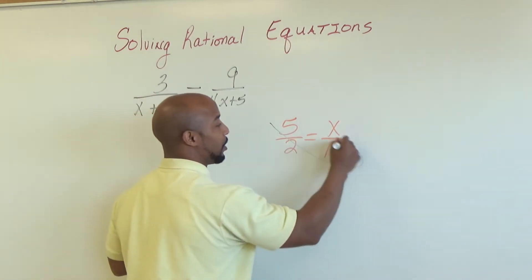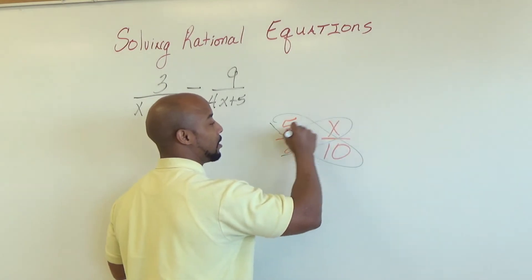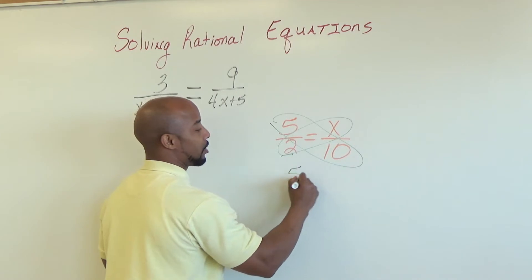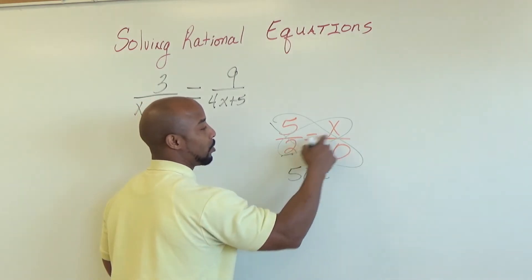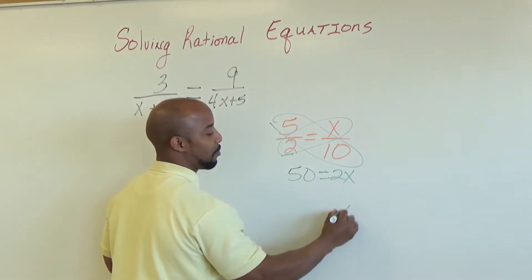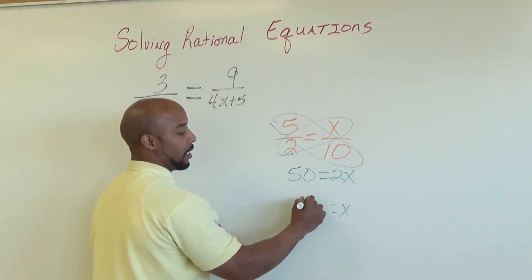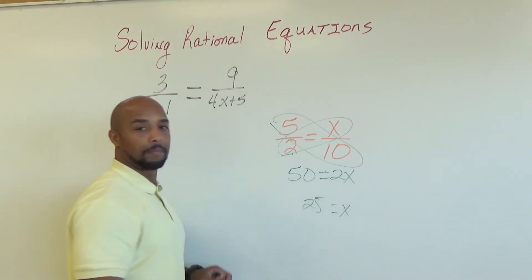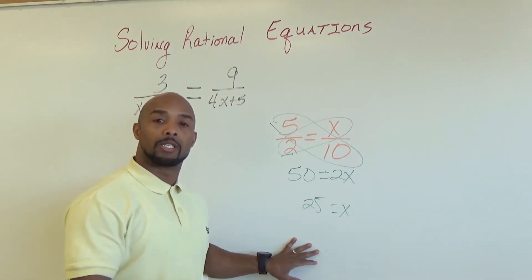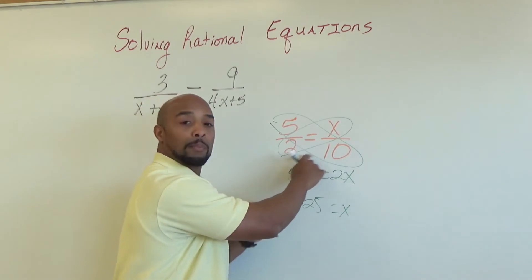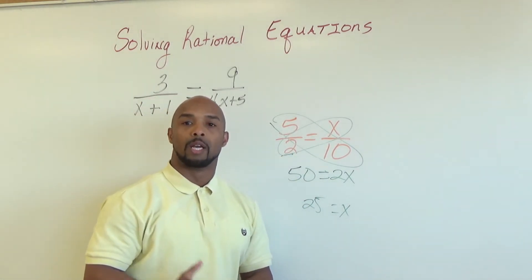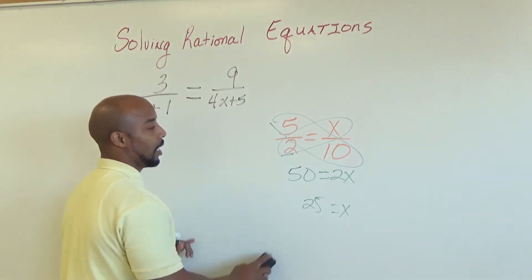Some of you may know it as the butterfly method, where you multiply opposite numerator and opposite denominator — so this would be 50 is equal to 2x. Solving it for x, you divide both sides by the coefficient and get 25. The objective here is not so much to find the answer but to understand that when you are looking at a proportion, we will use cross multiplication in order to solve it.